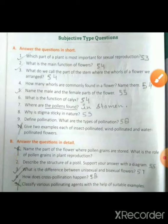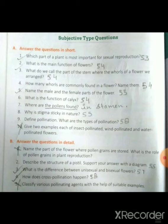Then you will see chapter 4. In chapter 4, you have to do which part of the plant is most important for sexual reproduction. Second question: What is the main function of flower? Third question: Name the male and female parts of flower. This is your question.